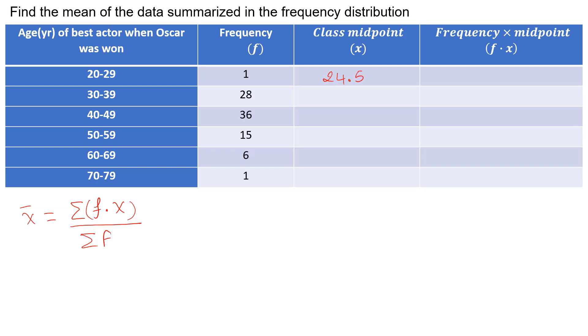Next class 34.5. Why? Because the class width is 10. So we're simply going to add 10 to each class midpoint to get the successive class midpoint. So our next class midpoint will be 44.5, 54.5, 64.5, and 74.5.